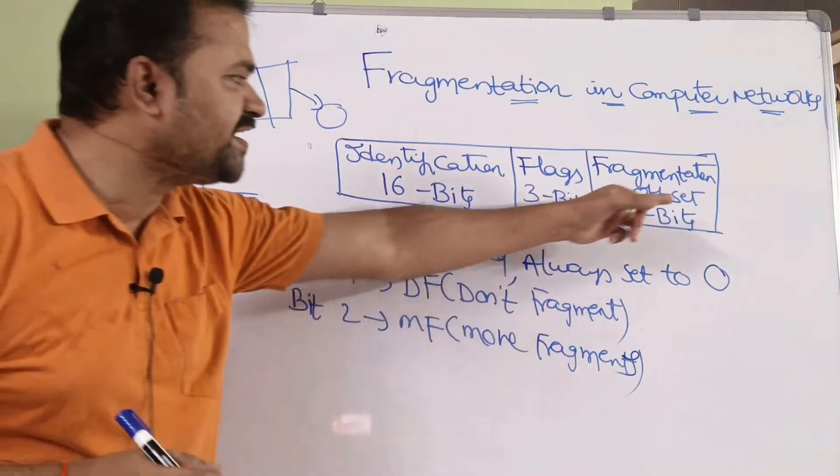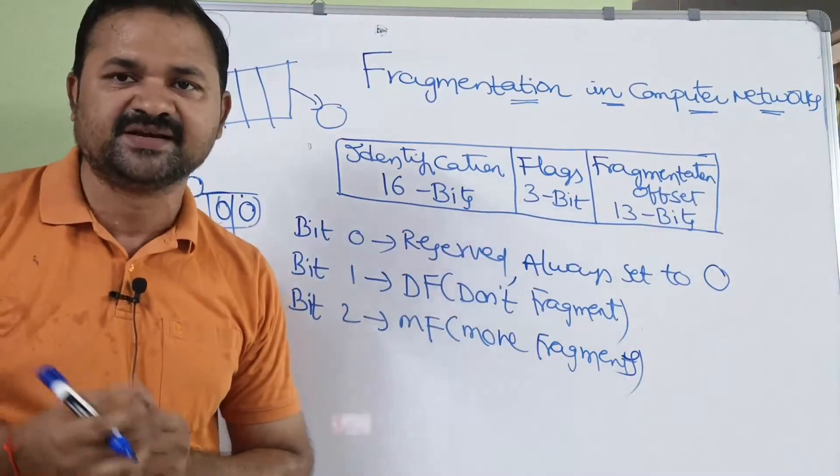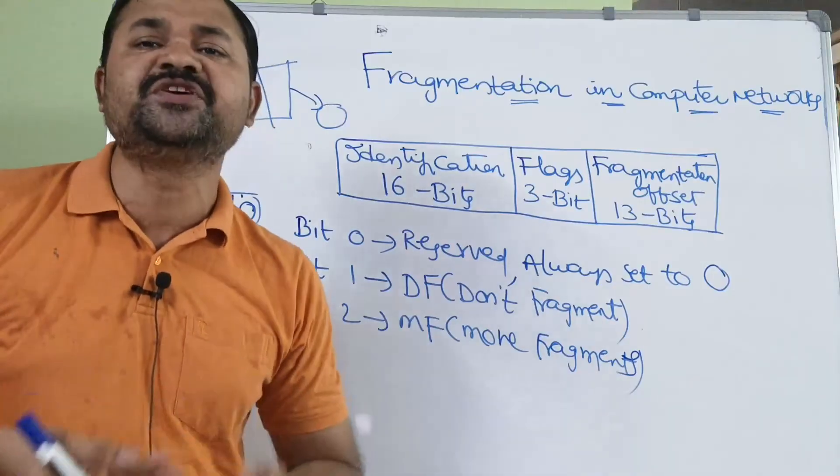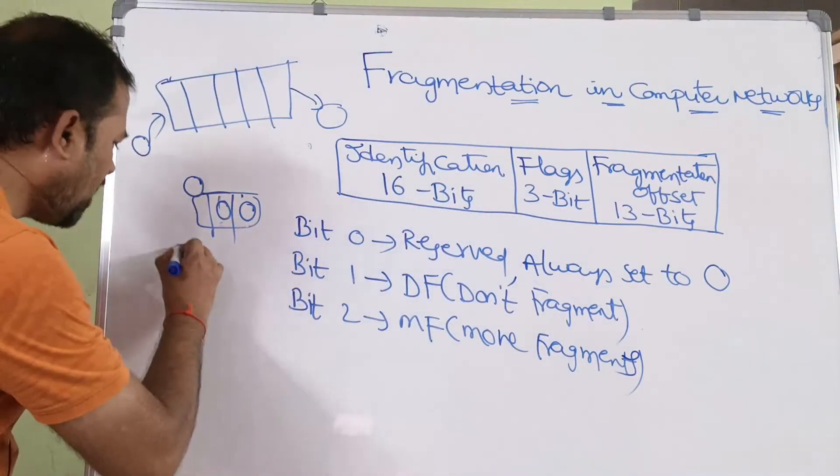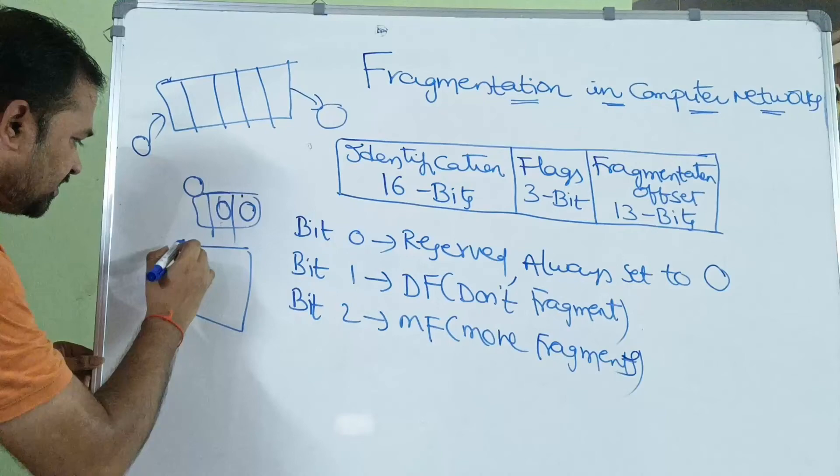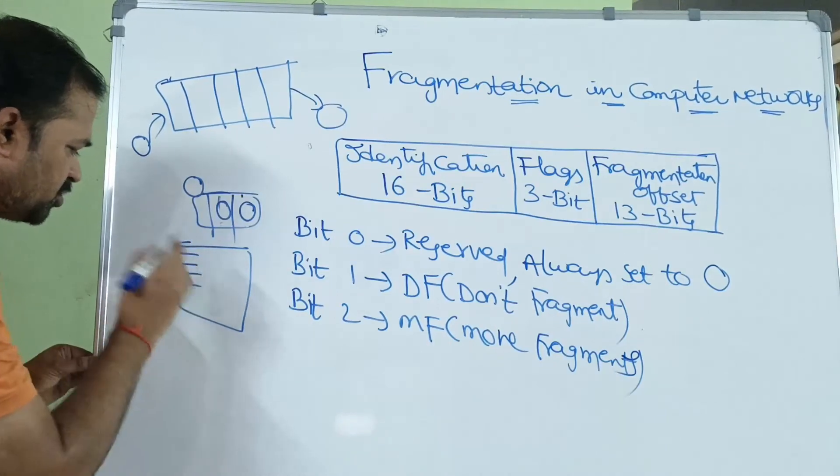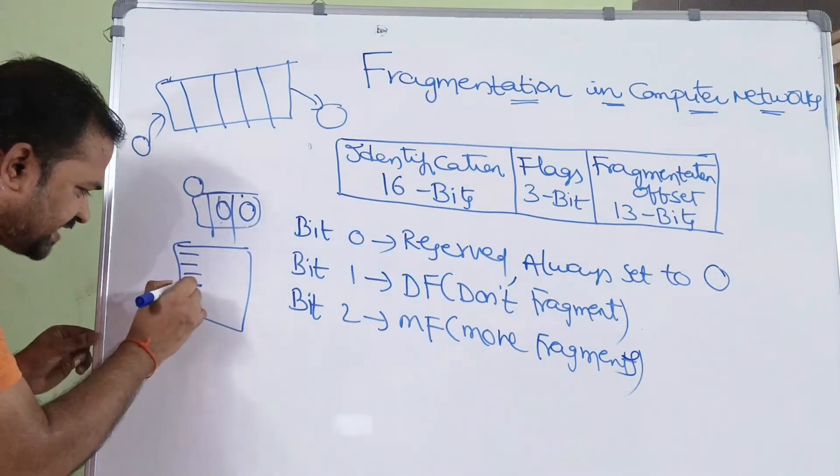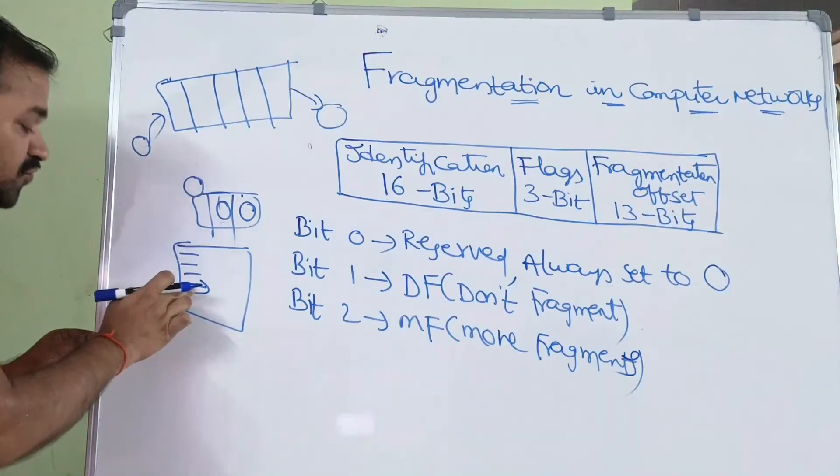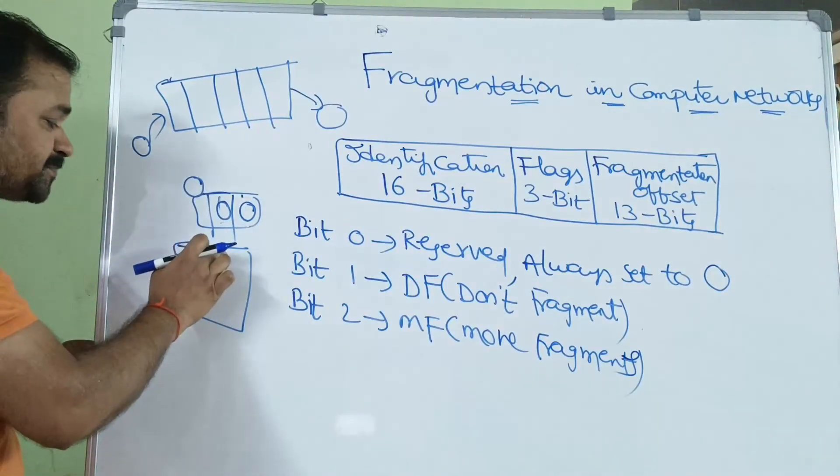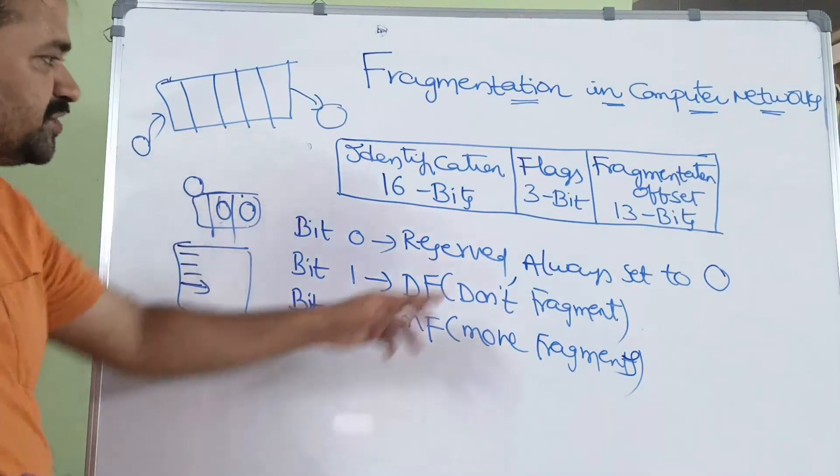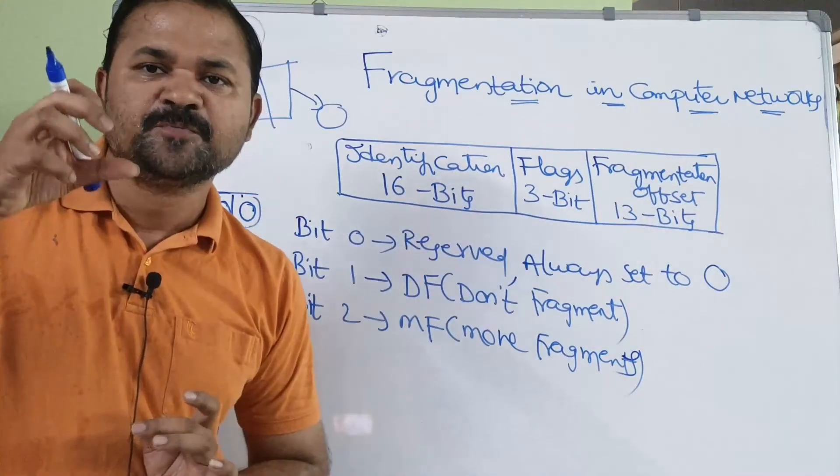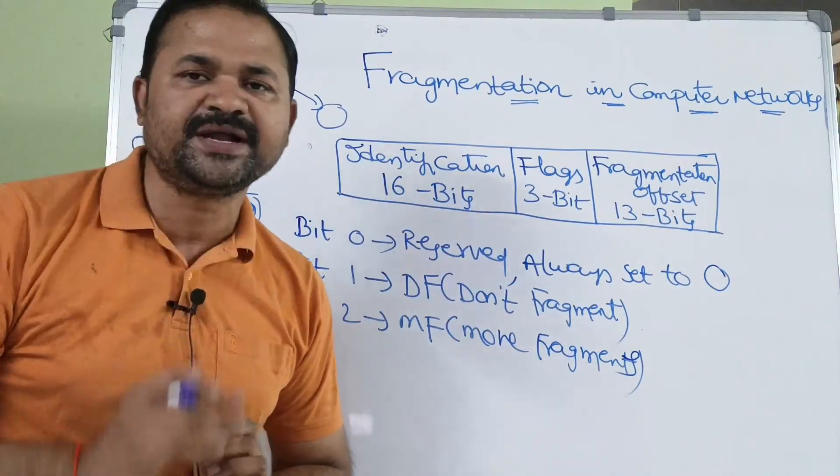And the next one is fragmentation offset. It specifies the position of the fragment. Let's say we have a fragment like this. Position - this is nothing but position. If we consider this one, this is the fourth position in the corresponding fragment. This offset specifies position in the corresponding fragment.